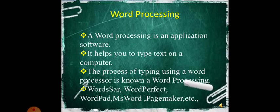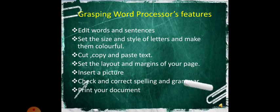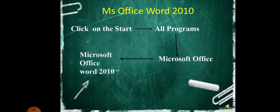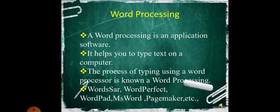First, what is a word processor? A word processor is an application software used to type text on the computer. We can type and edit the text. Examples of word processing software include WordPerfect, Wordport, MS Word, and Pagemaker. These are the word processing packages available.